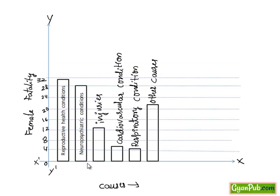For each cause, if we draw bars like this, we get the complete graph showing: reproductive health conditions at 31.8%, neuropsychiatric condition, injuries, cardiovascular condition, respiratory condition, and other causes.